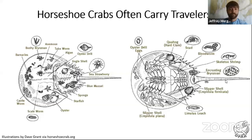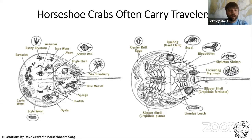Horseshoe crabs don't just eat things that live on the ocean floor — they often carry many travelers with them. Horseshoe crabs are the home for many ocean dwellers, including barnacles, mussels, sponges, baby oysters, different shrimps, and leeches. So horseshoe crabs are really important for the entire benthic, or ocean floor, community.